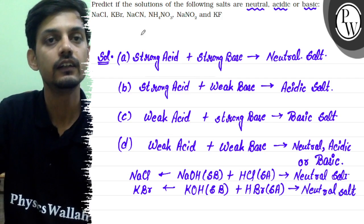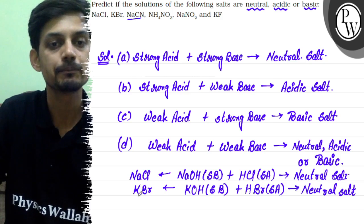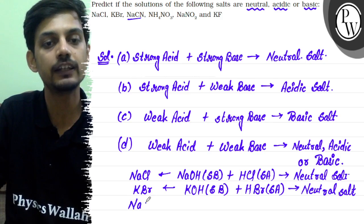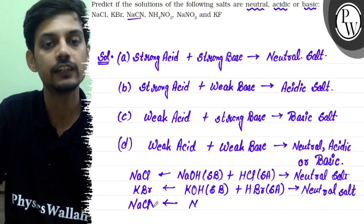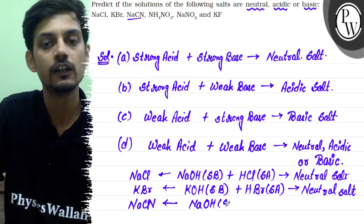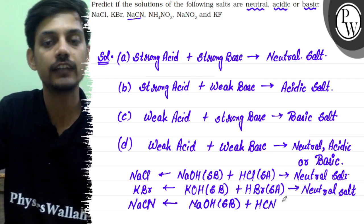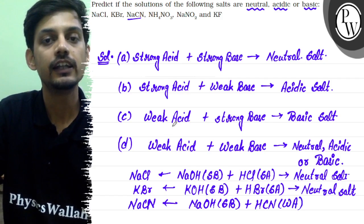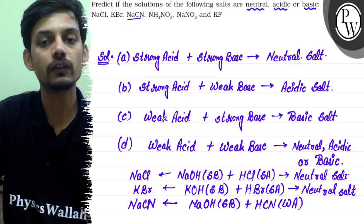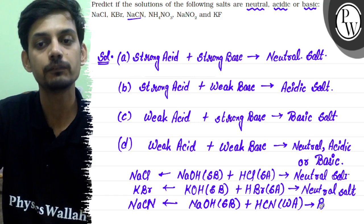The third salt is NaCN. NaCN is formed by the neutralization of NaOH, which is a strong base, with HCN (hydrogen cyanide), which is a weak acid. This belongs to the strong base–weak acid category, and therefore this salt will be a basic (alkaline) salt.